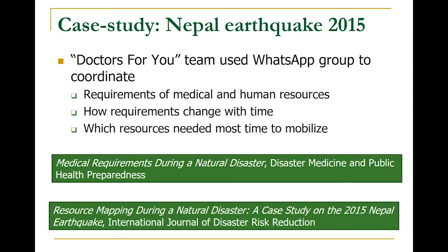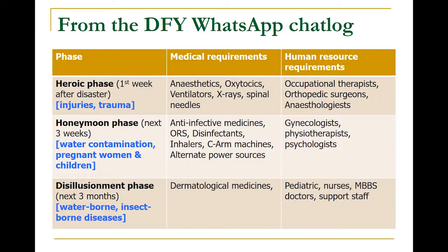Analyzing this data, we found good information on what kind of medical resources or human resources would be necessary in the aftermath of an earthquake. During an earthquake there are different phases — using terminology from the US government, there is the heroic phase (the first week), the honeymoon phase (the next three weeks), then the disillusionment phase, and so on. The main issues keep changing across these phases.